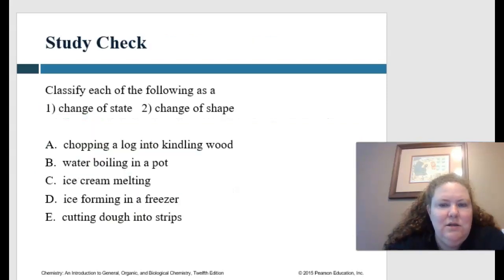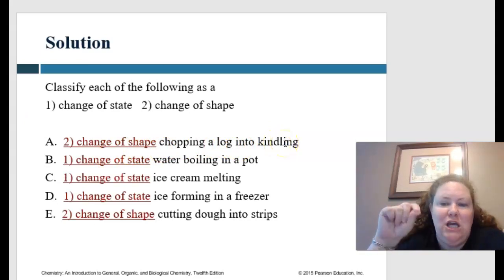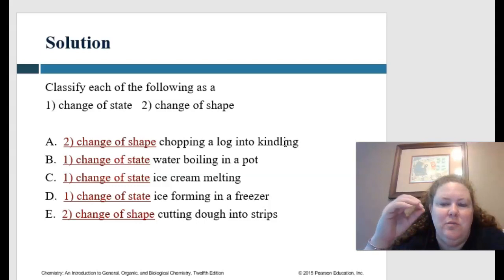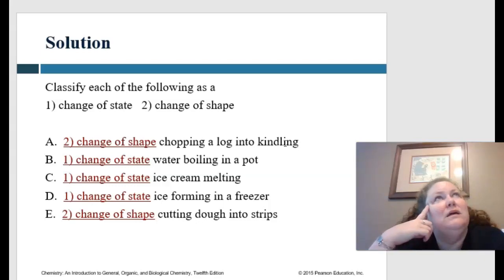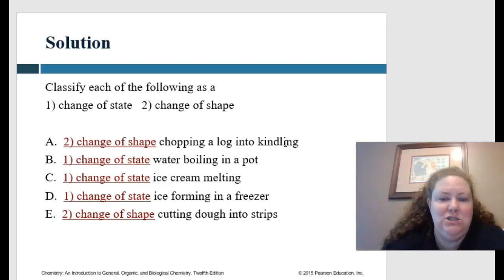Let's practice classifying each of the following as either a change in state or change of shape. Chopping a log into kindling is a change of shape. Boiling water in a pot is a change of state from liquid to gas. Ice cream melting is a change of state. Ice forming in the freezer is a change of state. And cutting dough into strips is a change of shape.